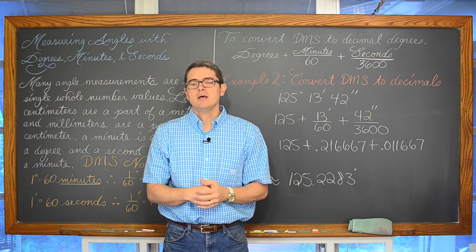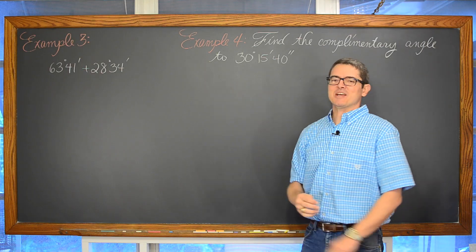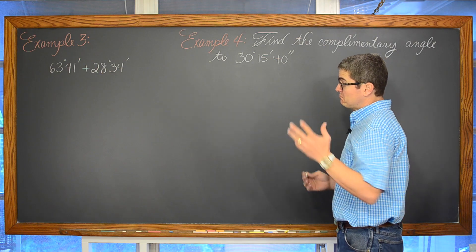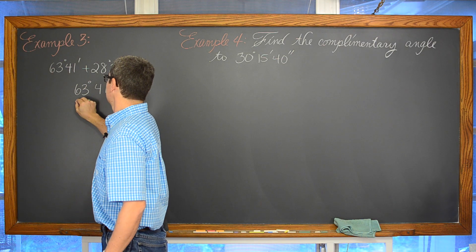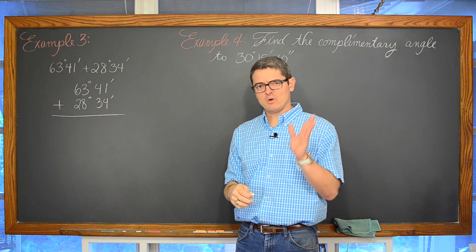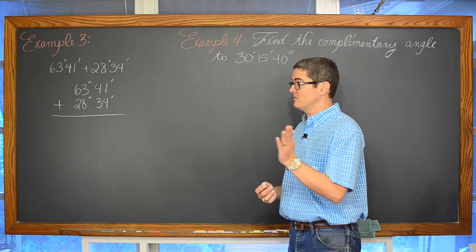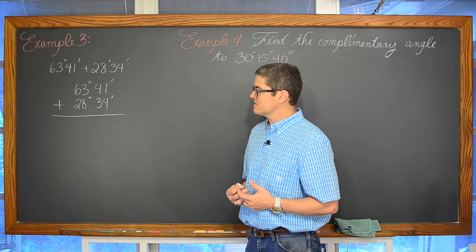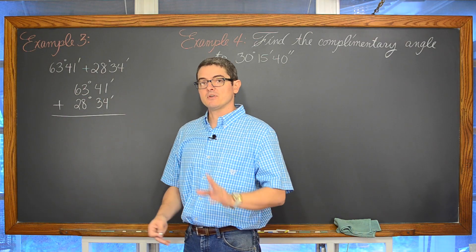Now how do you add angles and subtract angles that are in this DMS format? Well let's find out. Example 3: we are going to add 63 degrees and 41 minutes to 28 degrees and 34 minutes. You can also write this in column format — 63 degrees, 41 minutes, plus 28 degrees, 34 minutes. This isn't really base 10 — it is base 60 — because there are 60 minutes in a degree and 60 seconds in a minute, or 3600 seconds in a degree.